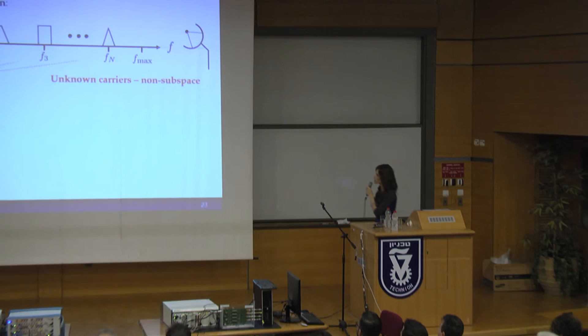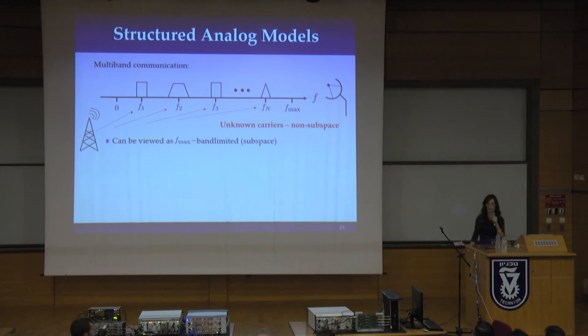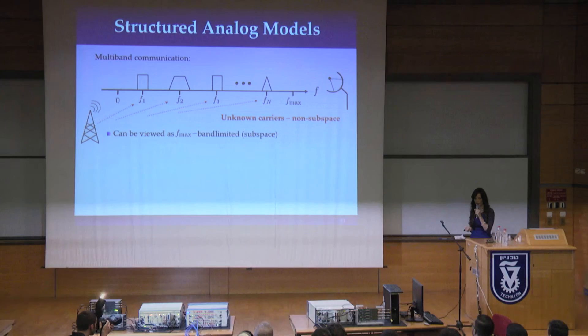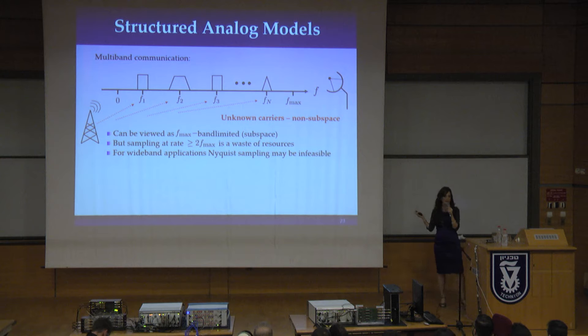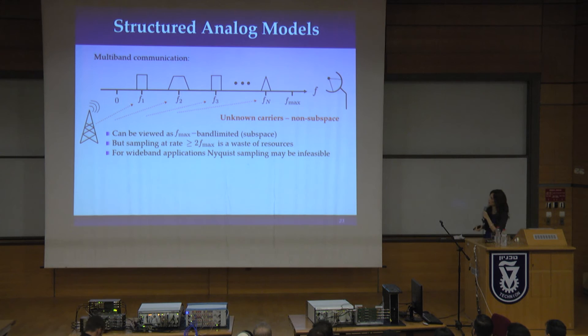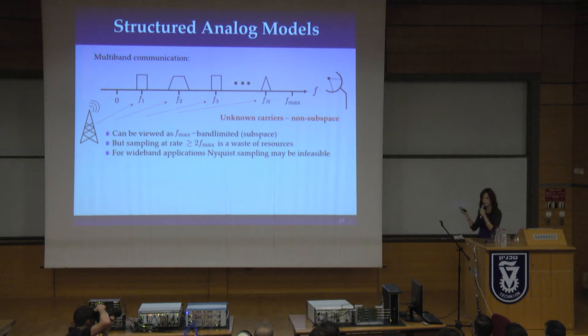One of the first examples we looked at is the multiband problem. In this problem, you have a signal that could be spread over a very wide spectrum, but it consists of several narrow bands. In reality, most of the spectrum is going to be zero, but the difficulty is that you don't know where these bands are located. Any such signal you could sample at the Nyquist frequency at f_max and clearly recover the signal, but this is obviously wasteful because most of the signal spectrum is actually zero — you're sampling a lot of zeros.